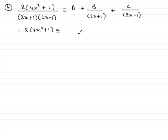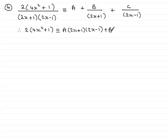That's going to be identical to a times (2x plus 1)(2x minus 1). Moving on to multiplying the next term by (2x plus 1)(2x minus 1), that leaves b times (2x minus 1), because the 2x plus 1 cancels. Then multiplying the final term by the denominator leaves c times (2x plus 1).